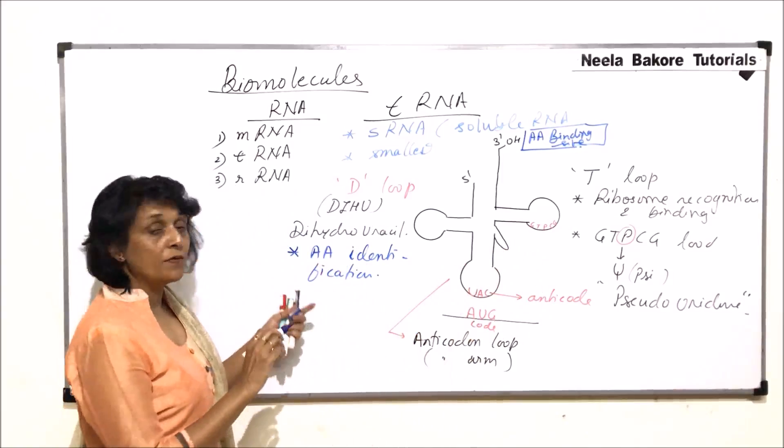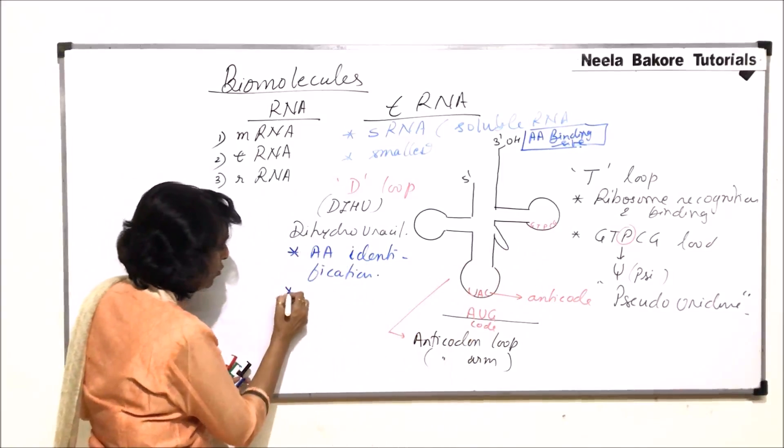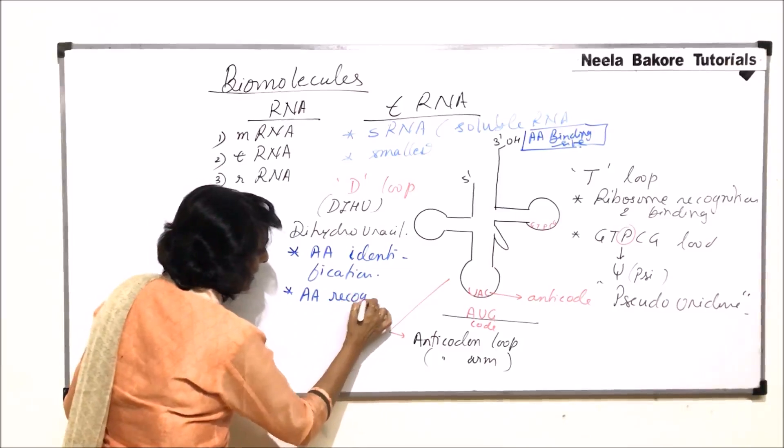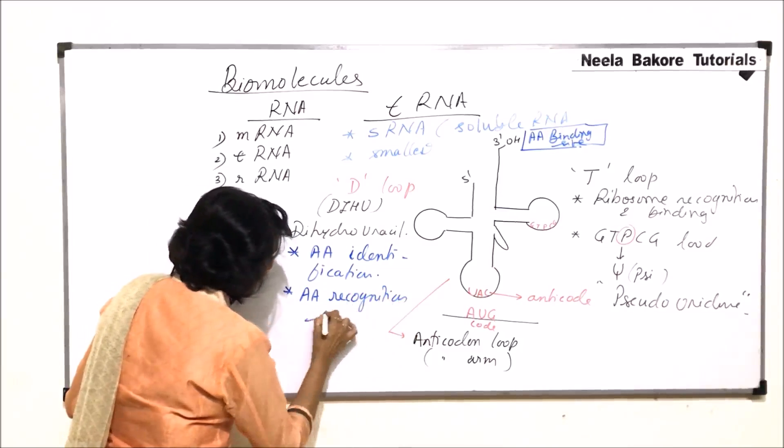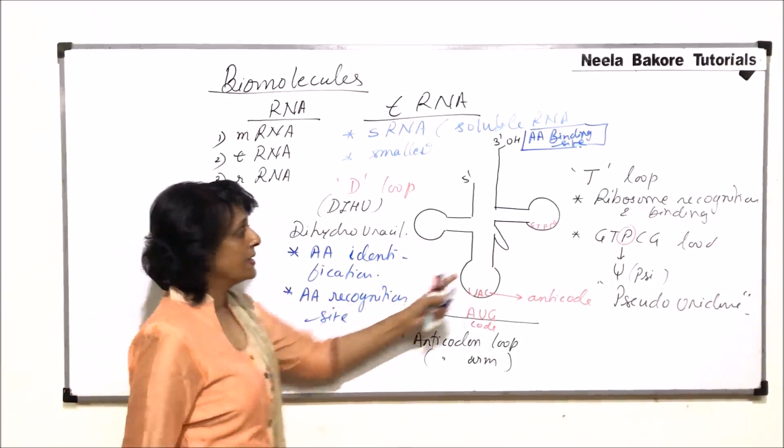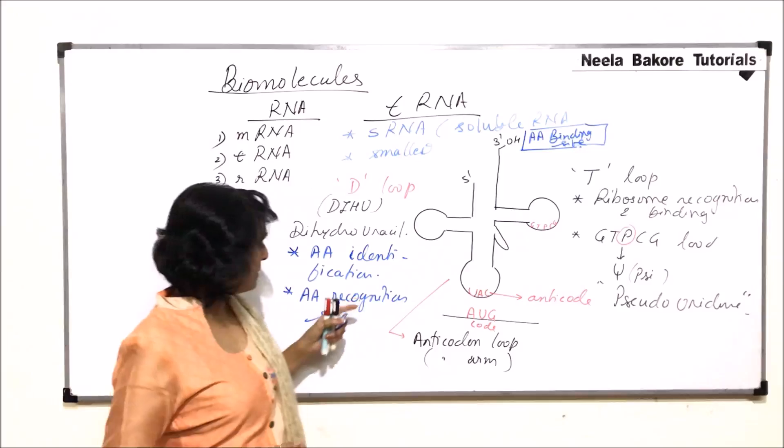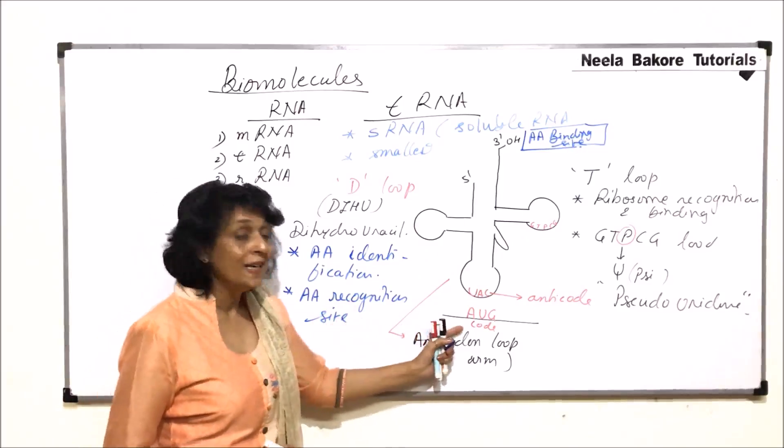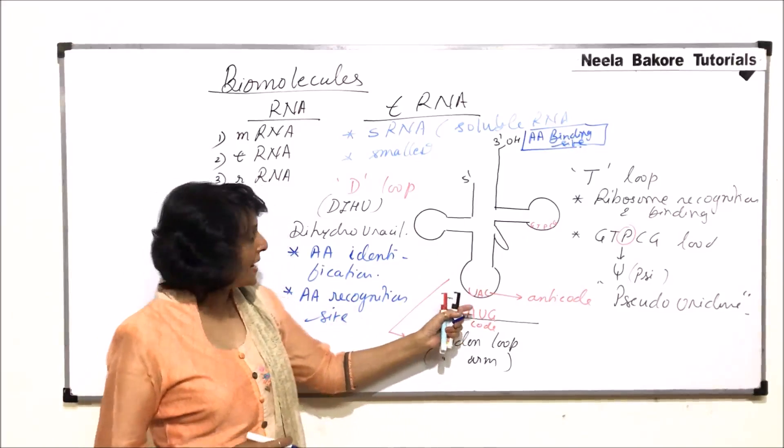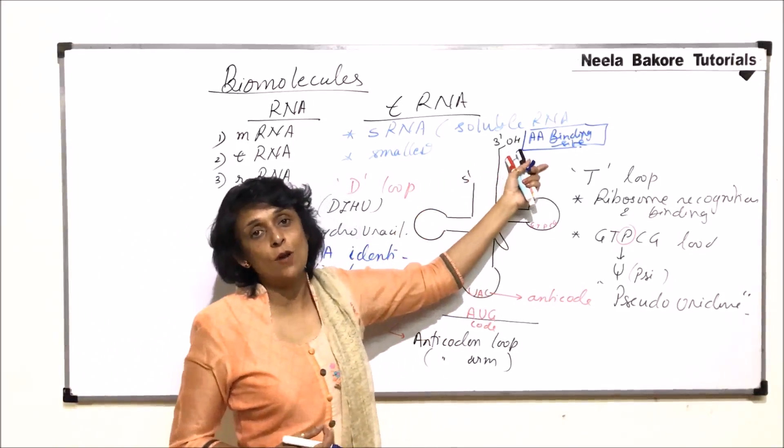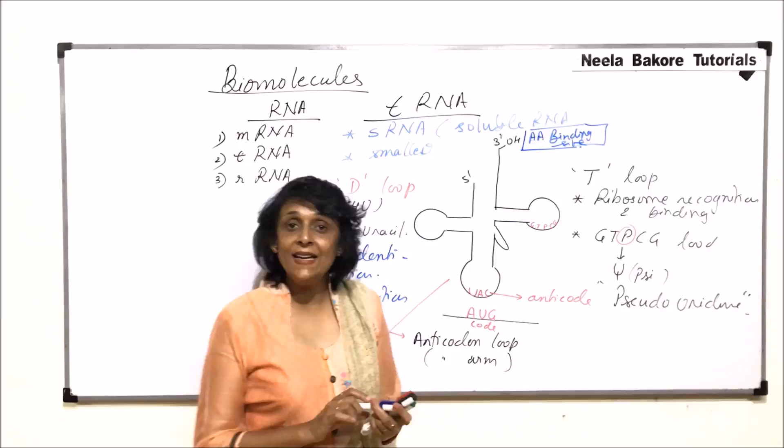And because of the function this D-loop is also known as amino acid recognition site. This T-loop is known as ribosome recognition site. This is amino acid recognition site. This is the code reading site or anticodon site. And here amino acid binding site.